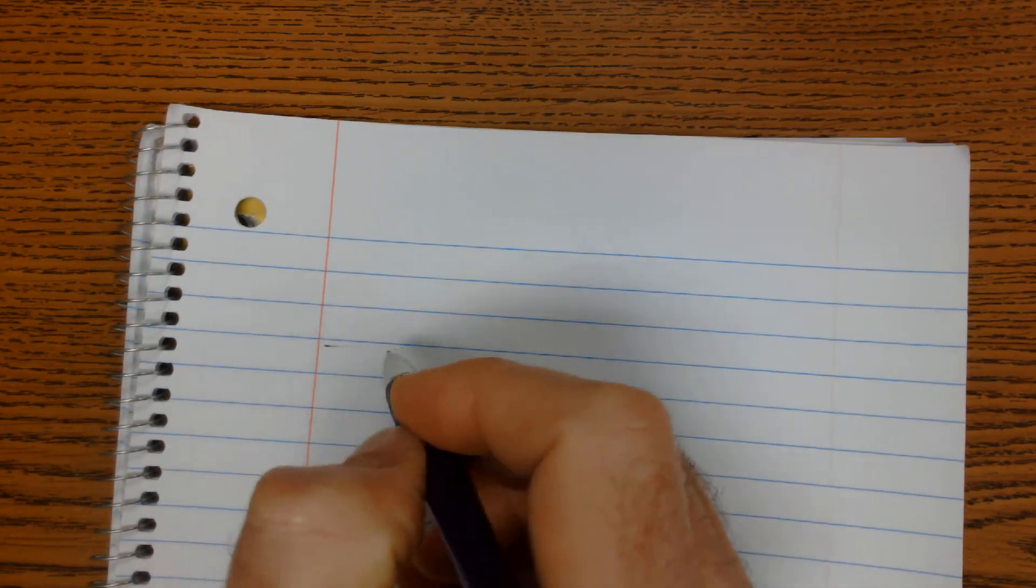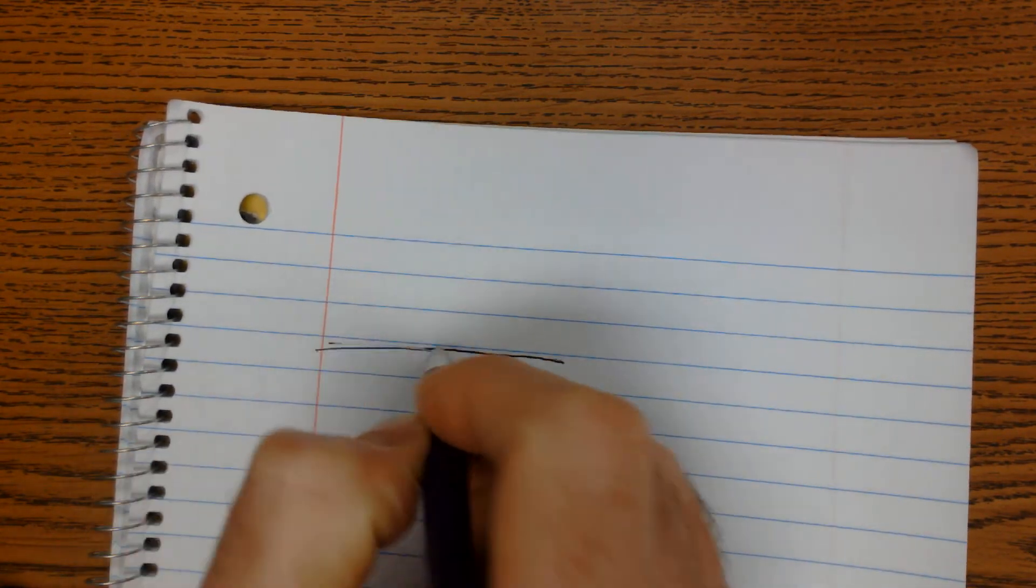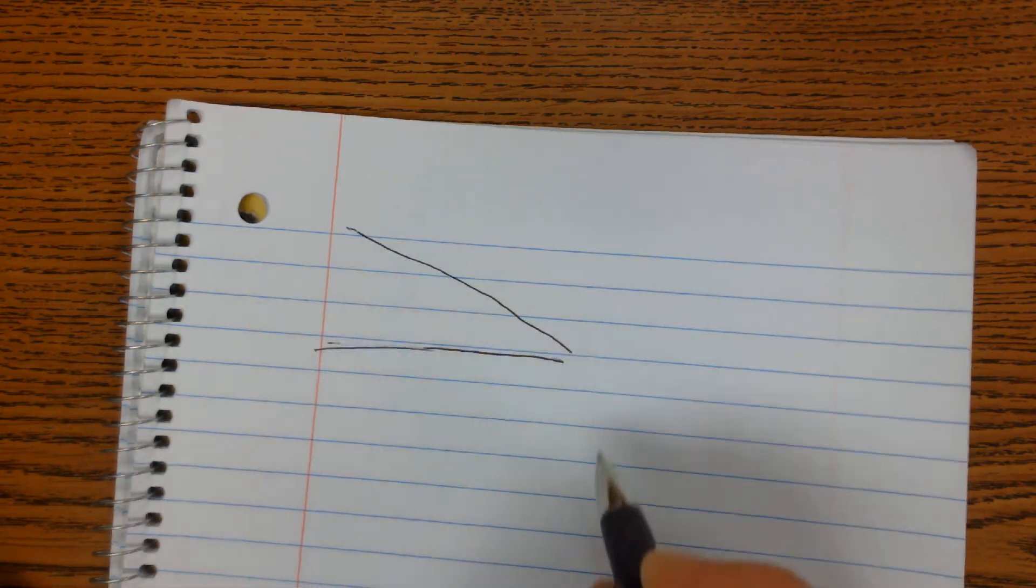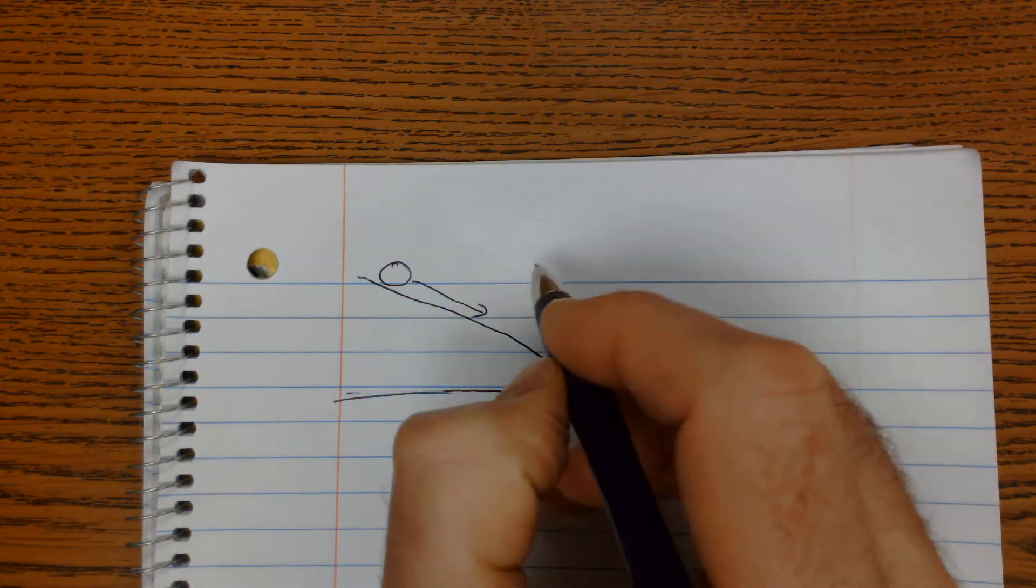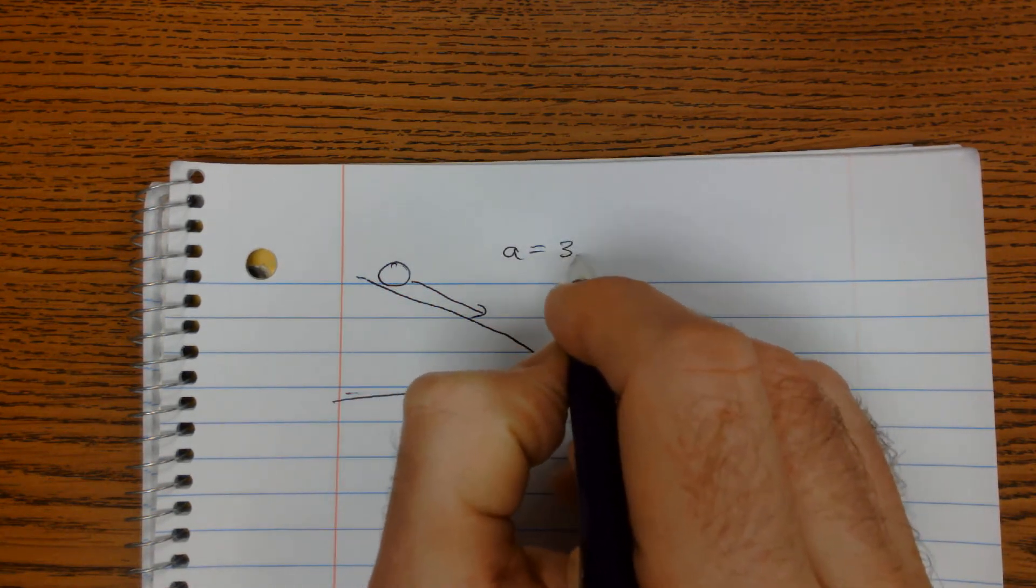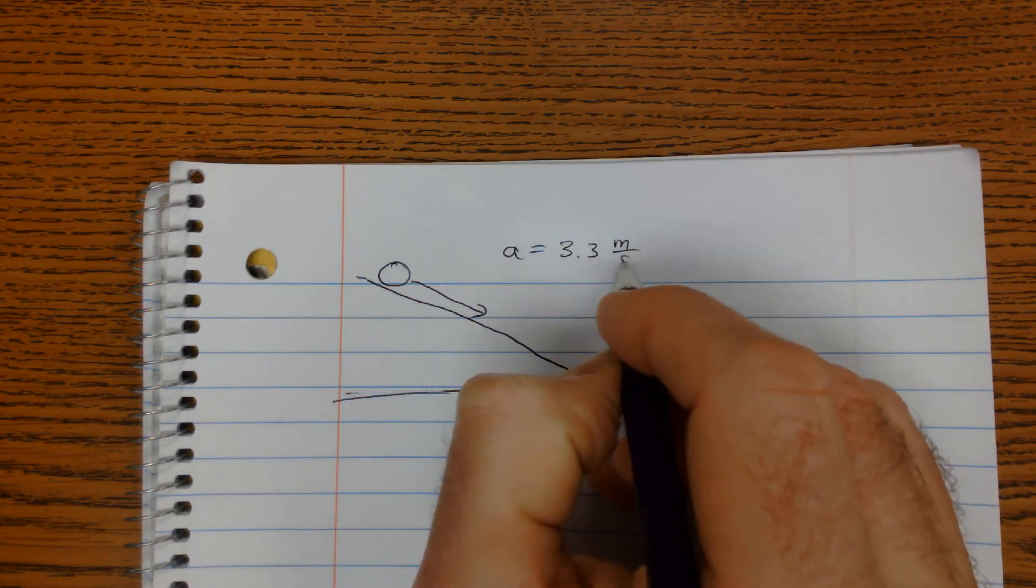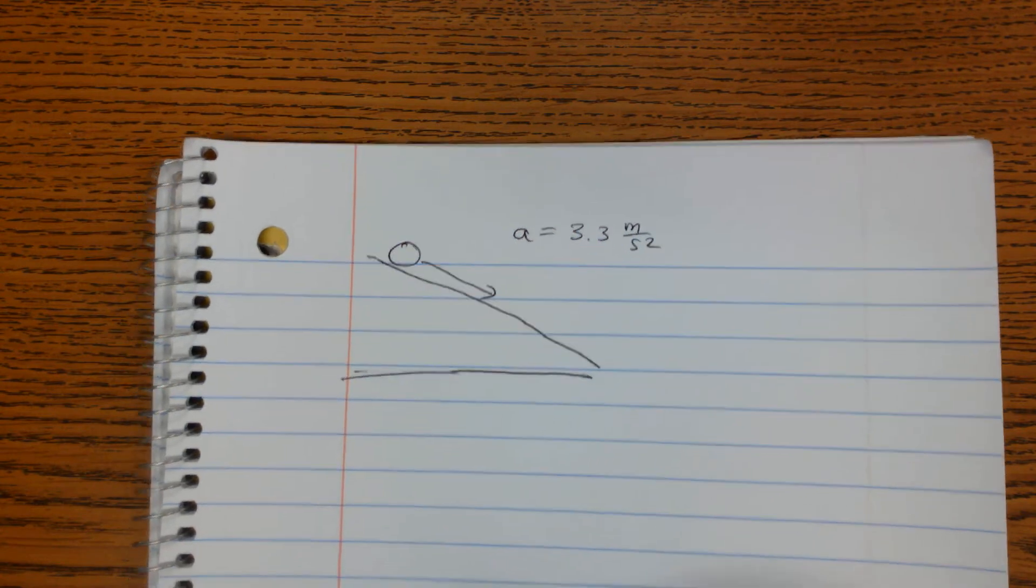Let's go ahead and do that problem, and let's start by diagramming what that looks like. So here's our hill, and here's the ball, and it's going to roll down the hill, and we know that the acceleration is 3.3 meters per second squared.